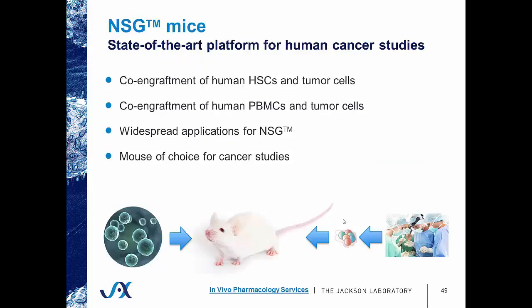What I've shown you today is that NSG mice are the state-of-the-art platform that can be used for human cancer studies because they support the engraftment of human immune cells and tumor cells. They also support the co-engraftment of human peripheral blood mononuclear cells and tumor cells. There are widespread applications that can be used for the NSG platform, and they should be your mouse of choice for cancer studies.